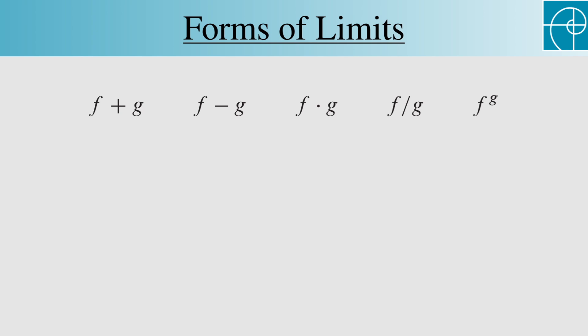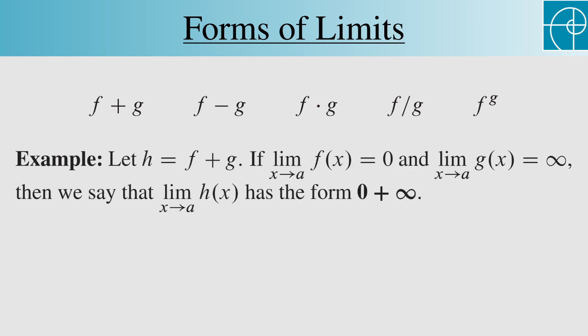Let's define form by example. Let h be f plus g. If the limit of f at a is 0, and the limit of g at a is infinity, then we say that the limit of h at a has the form 0 plus infinity. So the form is determined by the individual limits of the two functions that make up h.